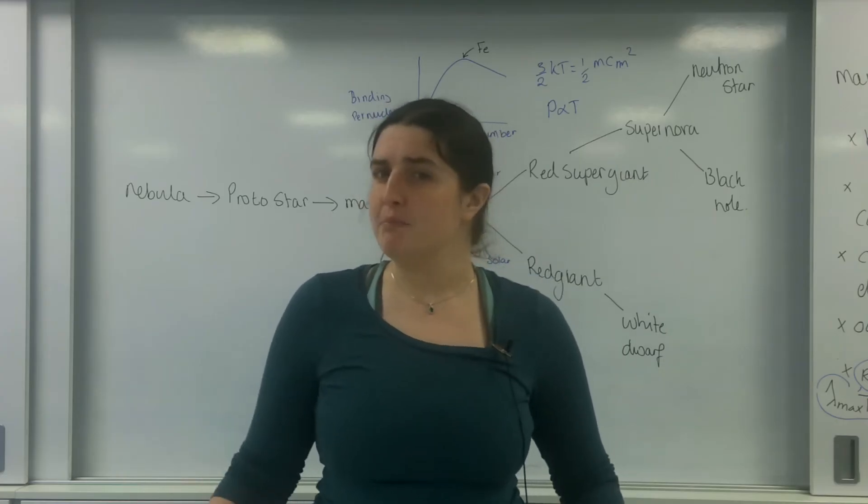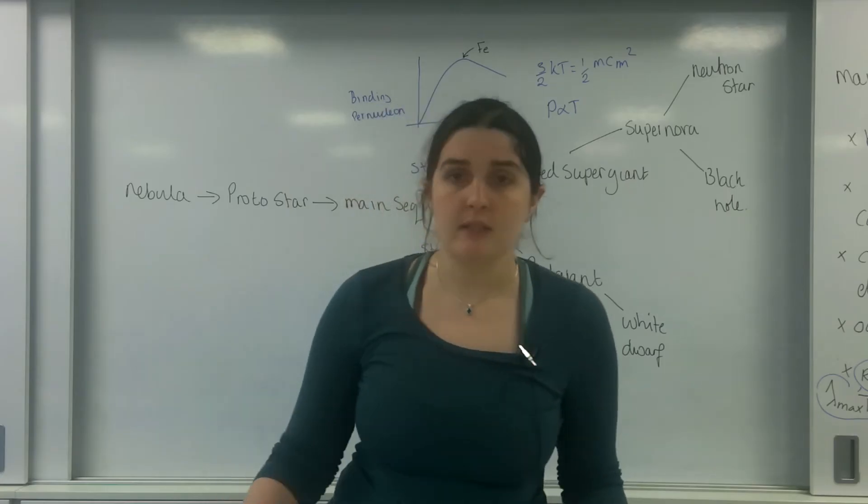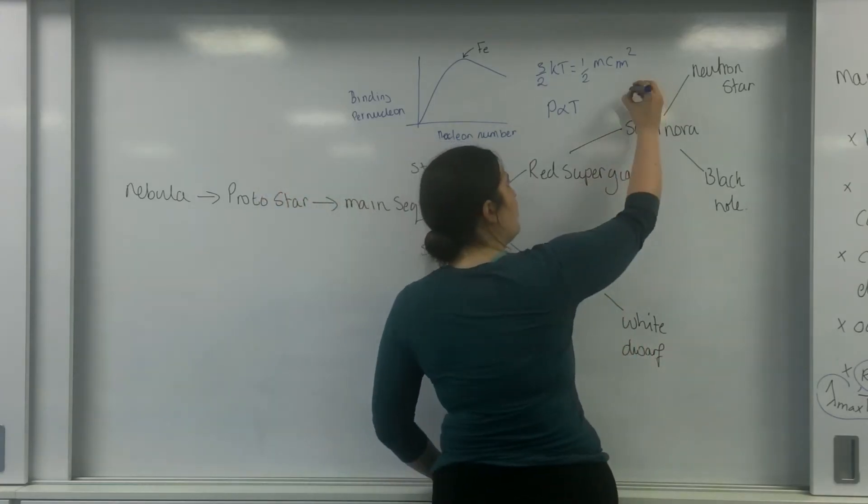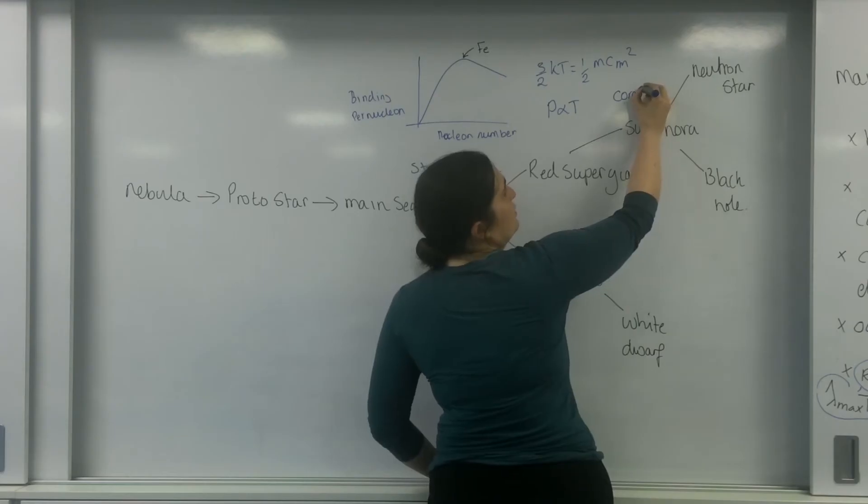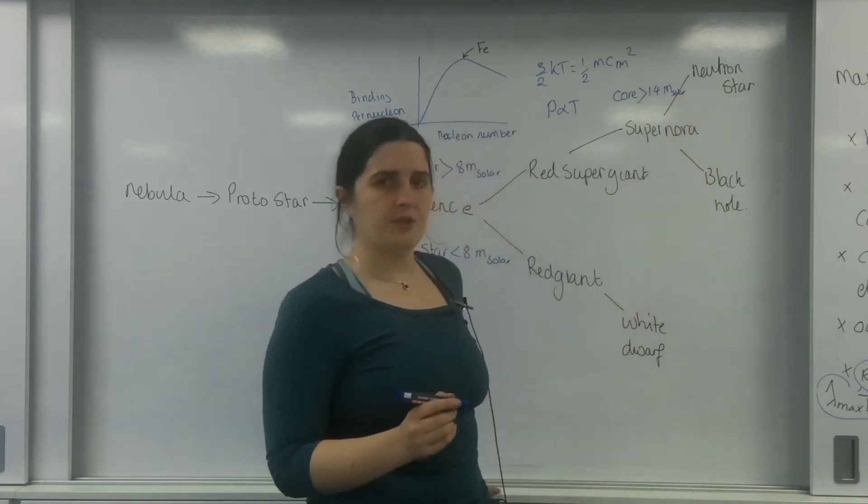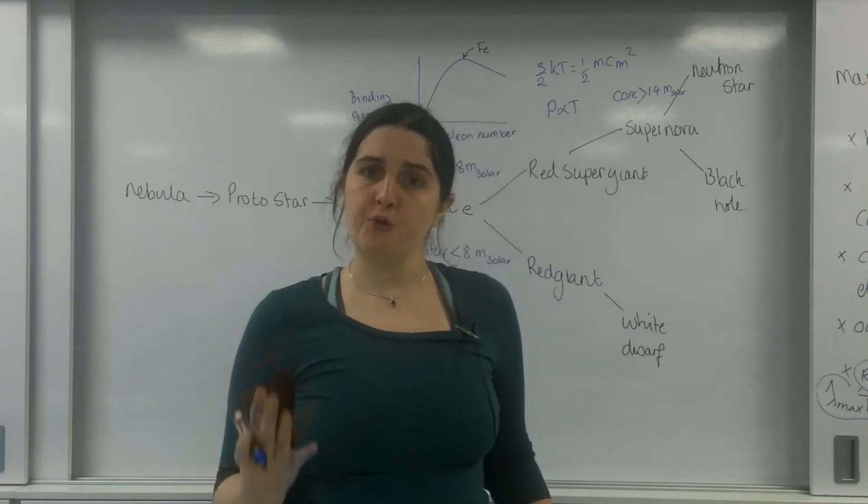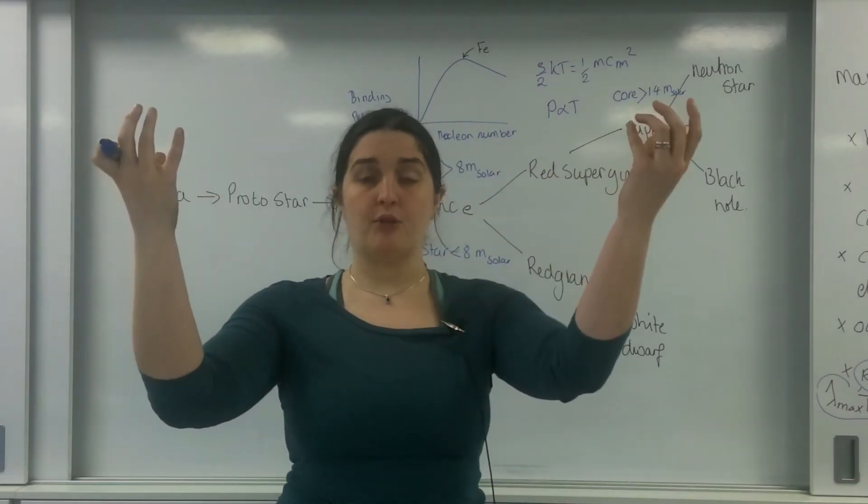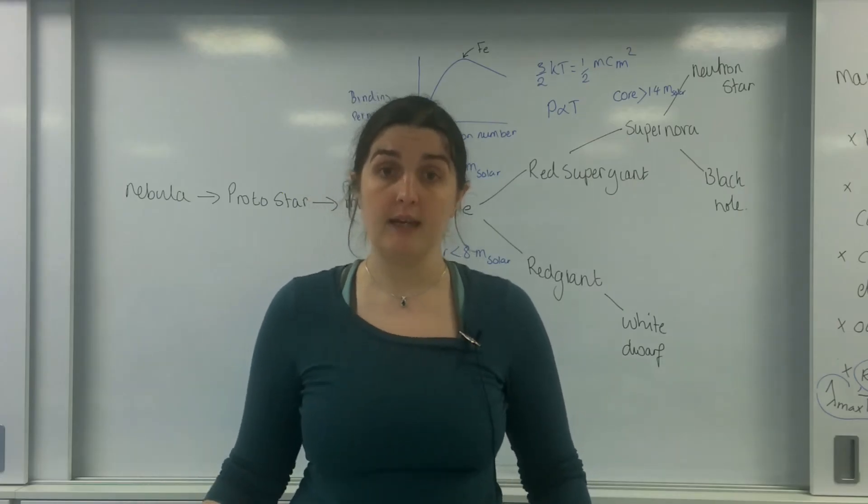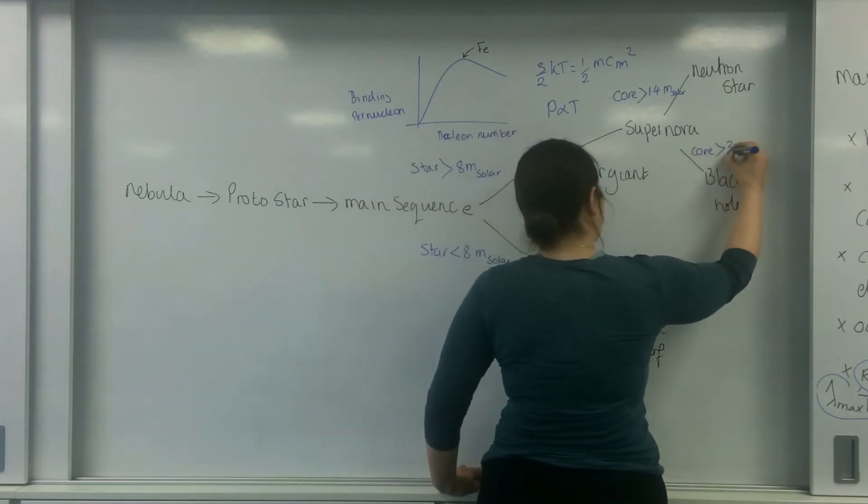Now, what is left is important, depending on how much the core weighs. And we call this the Chandrasekhar limit. If the core is greater than 1.4 solar masses, it will become a neutron star. A neutron star is a star that has so much gravitational force that it can take the proton and the electron, a stable baryon and a stable lepton, and fuse them back into a neutron.